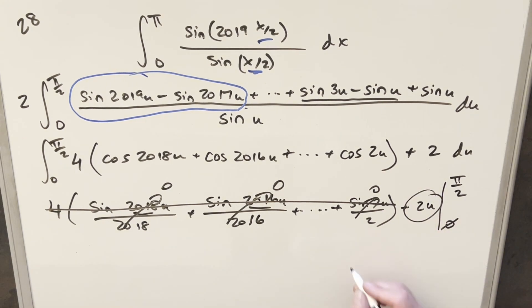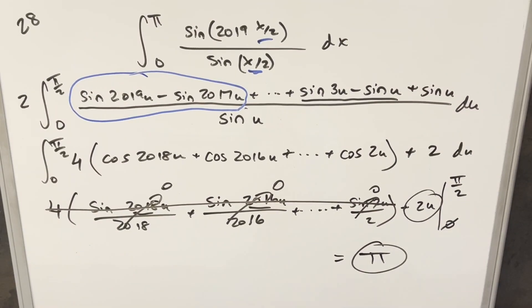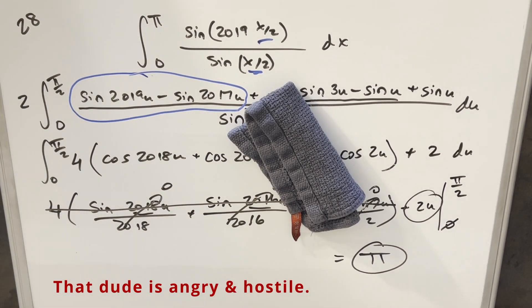So for my final solution, we just have pi. Okay, there you have it. Good problem from UNSW 2019. Thanks everyone for watching. Have a good day.